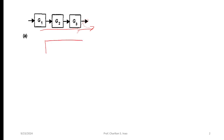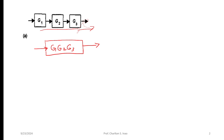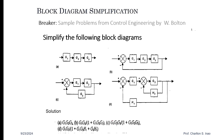We form a single block or square and then we have to put the input and the output. We're just going to multiply the three transfer functions G1, G2, and G3. That's the simplified version, and that's the answer: G1, G2, and G3.